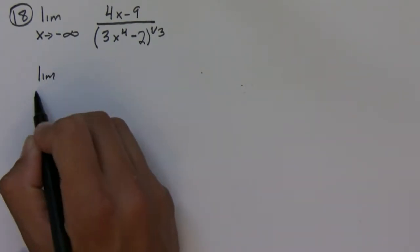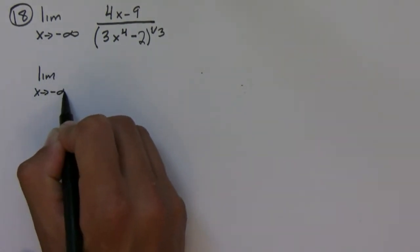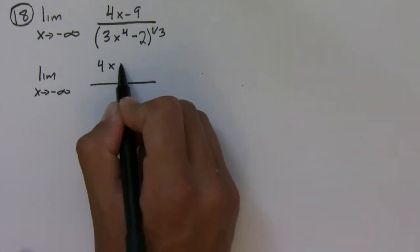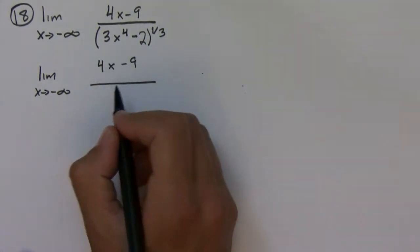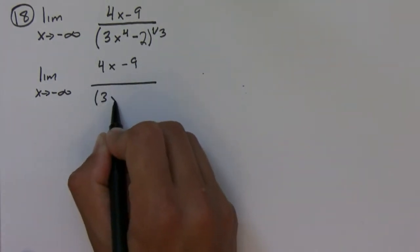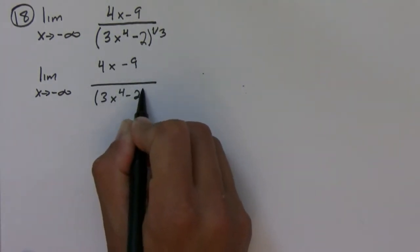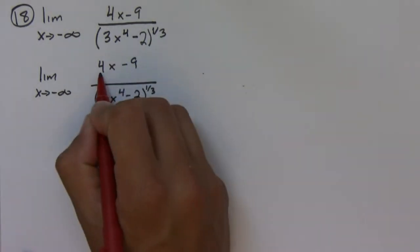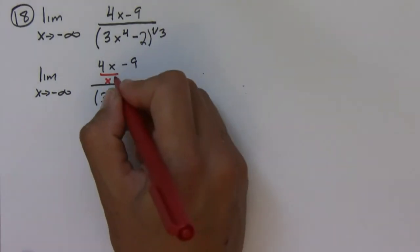So let's do that. We're gonna have 4x minus 9, and then in the denominator we're going to have 3x to the fourth minus 2, to the one-third.